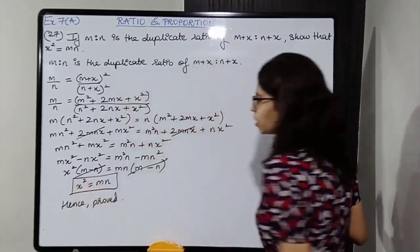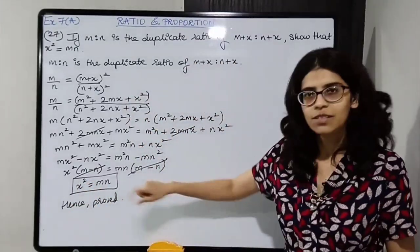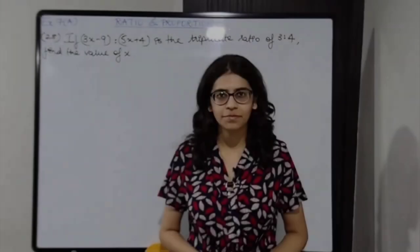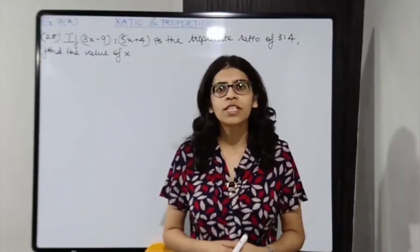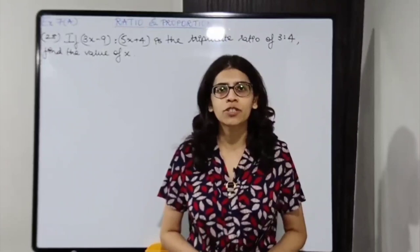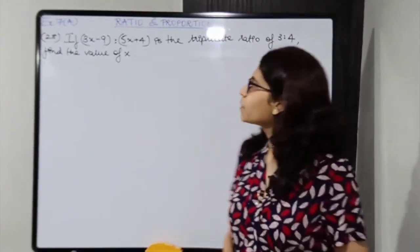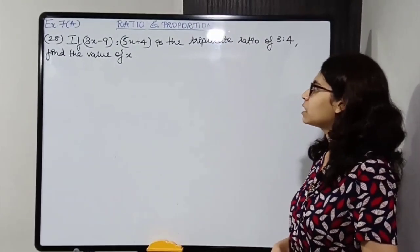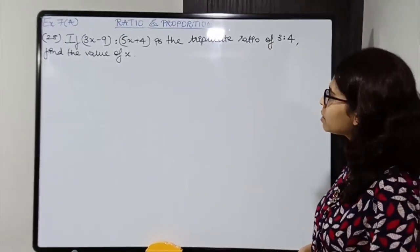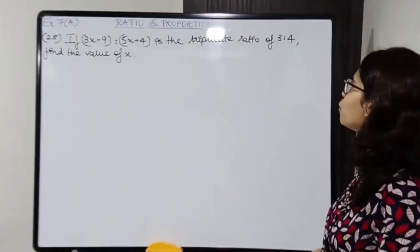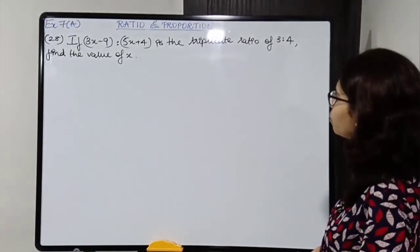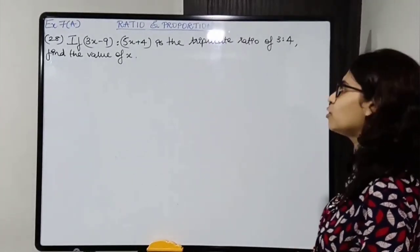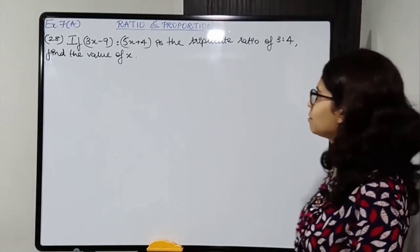Box this. Proceeding to next question — question number 28. If 3x minus 9 is to 5x plus 4 is the triplicate ratio of 3 is to 4, find the value of x.